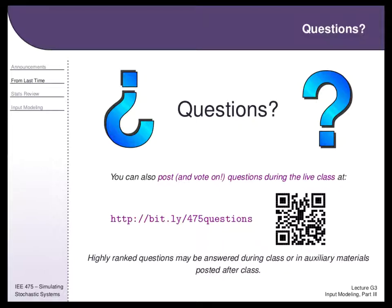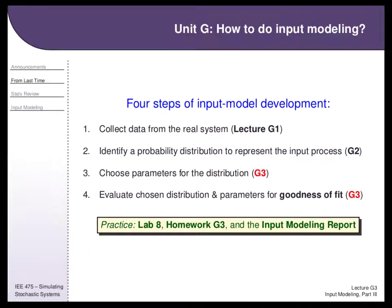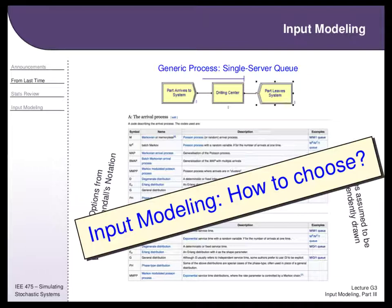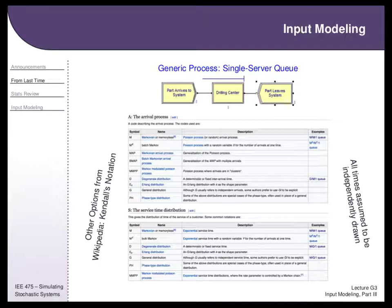Are there any questions? [Student question about why separate a bimodal distribution into two categories rather than using a single distribution that already captures the variability.] So the question is: if I already have an empirical bimodal distribution for service times, why go back and break it into a decide block sending some people to a small service time and some to a large service time? Sometimes it's okay to leave it in simplified form, but the downside is that this hides apparently important features of the system.